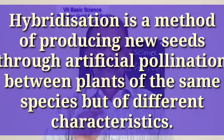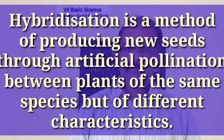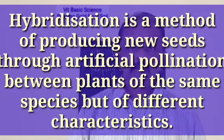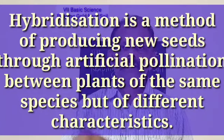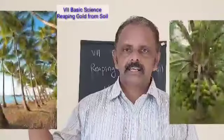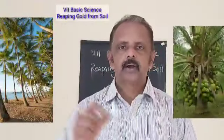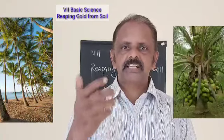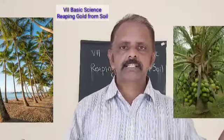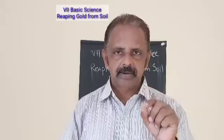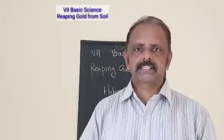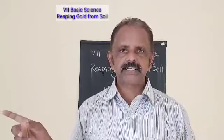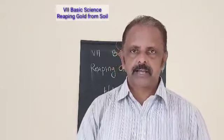Seeds produced in this way are called hybrid seeds. This process is called hybridization. Hybridization is a method to produce new seeds through artificial pollination between plants of the same species but with different characteristics. For example, both plants are coconuts — the same species — but one is tall and the other is dwarf, with different characteristics.